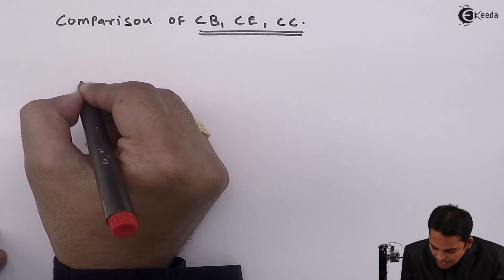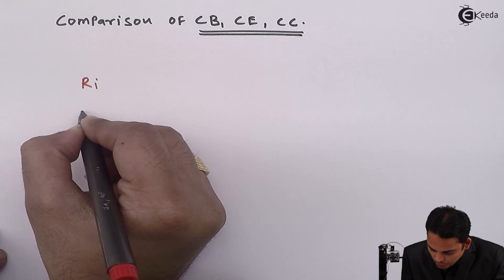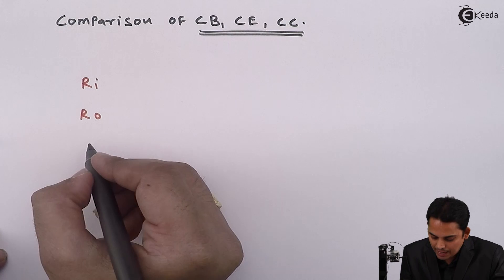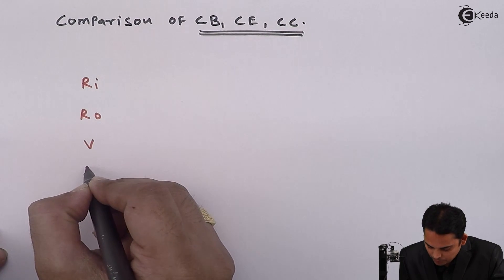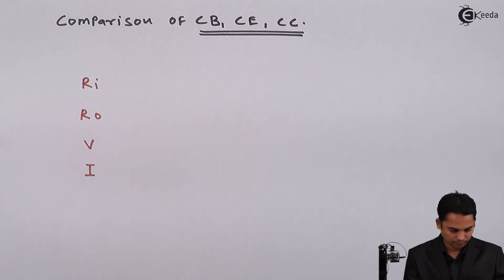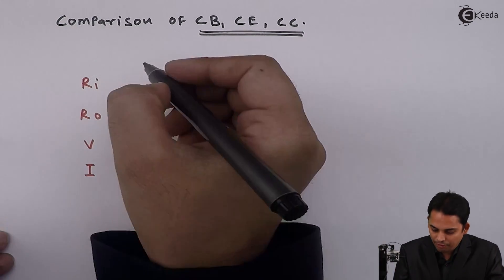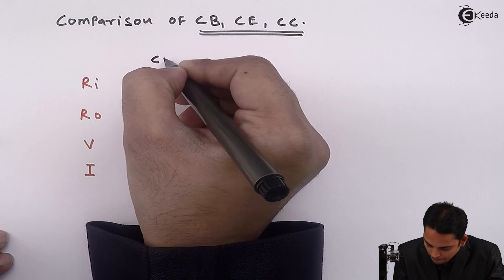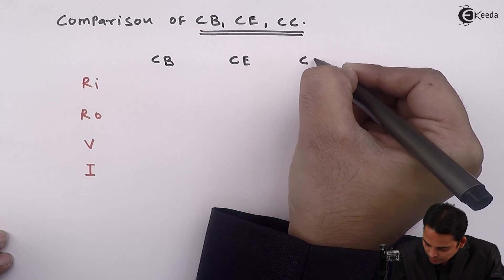The first parameter is input impedance (Ri), the second parameter is output impedance (Ro), the next parameter is voltage amplification, and the next parameter is current amplification. We will write different configurations: first is common base, second is common emitter, third is common collector.